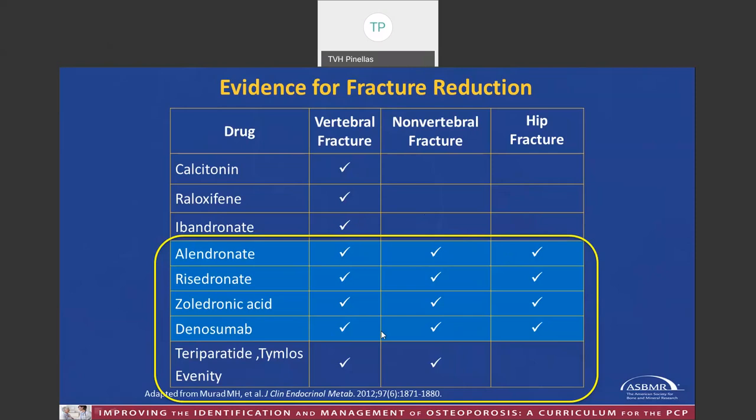Three of the preferred agents are bisphosphonates — alendronate, risedronate, and zoledronic acid — and denosumab is the anti-RANKL antibody, also called Prolia. The final three drugs — teriparatide (Forteo), timlos, and evenity — all reduced vertebral fracture and non-vertebral fracture, but did not achieve significance in lowering hip fracture, although all experts believe that if the trials had been large enough, these would have been successful in reducing hip fracture risk.